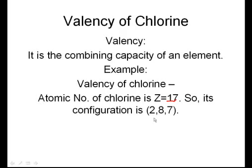2,8,7 are nothing but the number of electrons present in K, L, and M shells. 2 are the number of electrons present in K shell, 8 are in L shell, and 7 are in M shell.